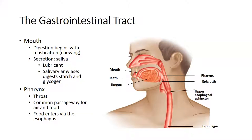Then we move into the pharynx. The pharynx is basically just the conduit — the pipe, the passageway — to allow food to go from the mouth to the stomach. The pharynx is the opening common to both the lungs and the esophagus, making it a common passageway for food and air. When we talk about food specifically, the pharynx becomes continuous with the esophagus.